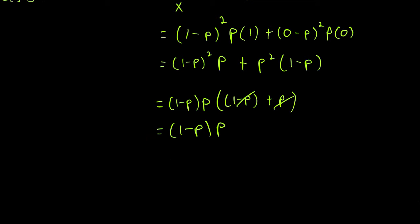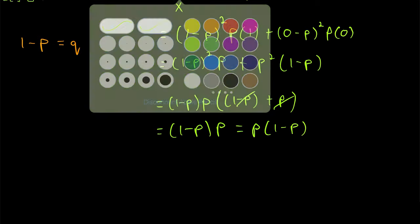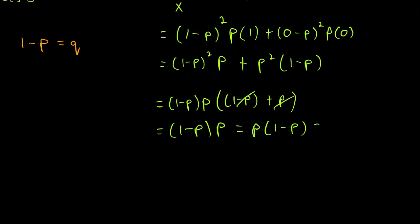And so the variance is p times (1 minus p), or equivalently (1 minus p) times p. Sometimes people call 1 minus p the probability of failure and denote it q, in which case we could write the variance as p times q — a pretty nice, simple expression.